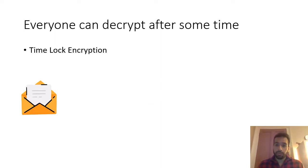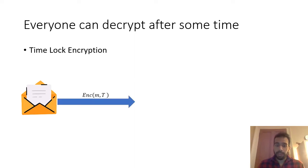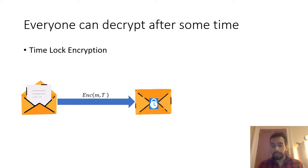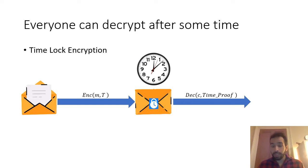With time-lock encryption we can solve such difficulties. Consider the same scenario: we have a plaintext, someone encrypts it with an encryption algorithm, and instead of using a public key, it uses a specific time at which this ciphertext should be opened. The result is a ciphertext, and then after this time has been reached, by using the decryption algorithm and a time proof — a proof that the time has been reached — everyone can retrieve the initial message.